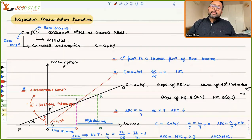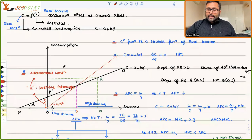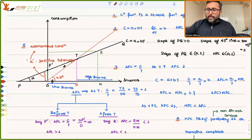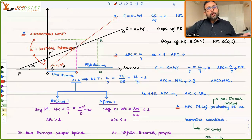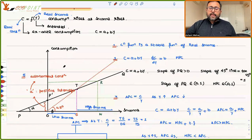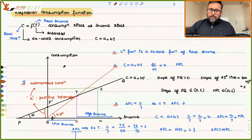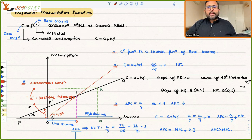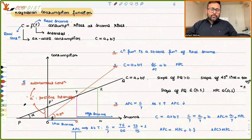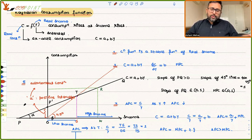To summarize: consumption function is a stable function of real income; MPC lies between zero and one; as income increases APC falls; MPC itself probably can decrease or will remain constant; and the consumption function has a positive intercept representing autonomous consumption — even if income is zero, you still have some consumption. Thank you.